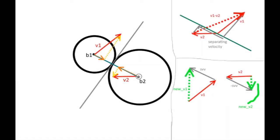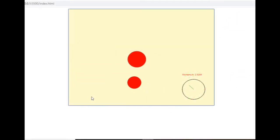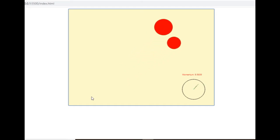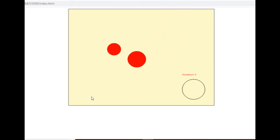Solving the collision response means determining the ball's velocity vector's direction and magnitude after the collision. That's what I will do in this episode, and at the end, the balls will be colliding following the rules of elastic collision.